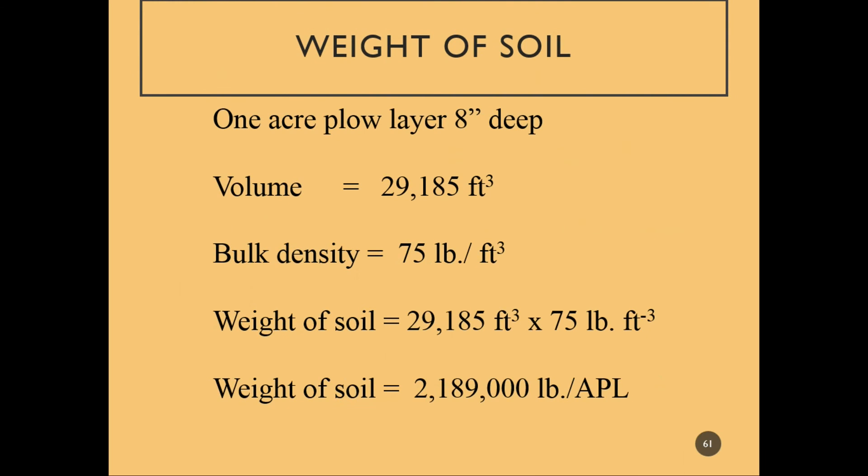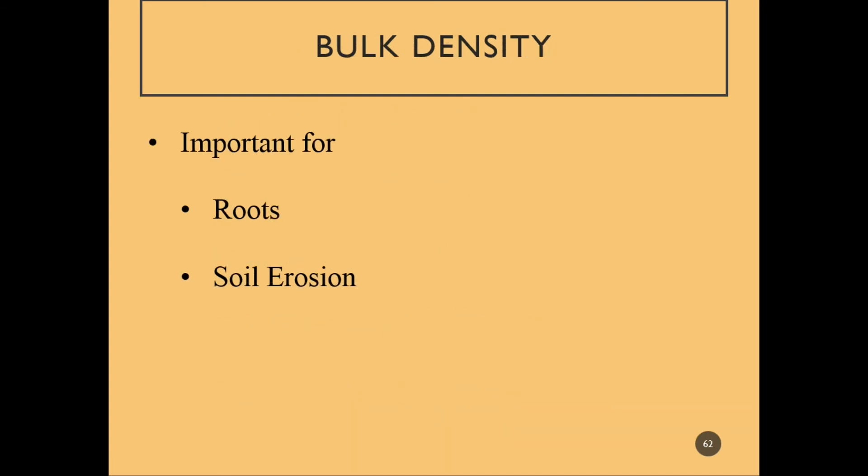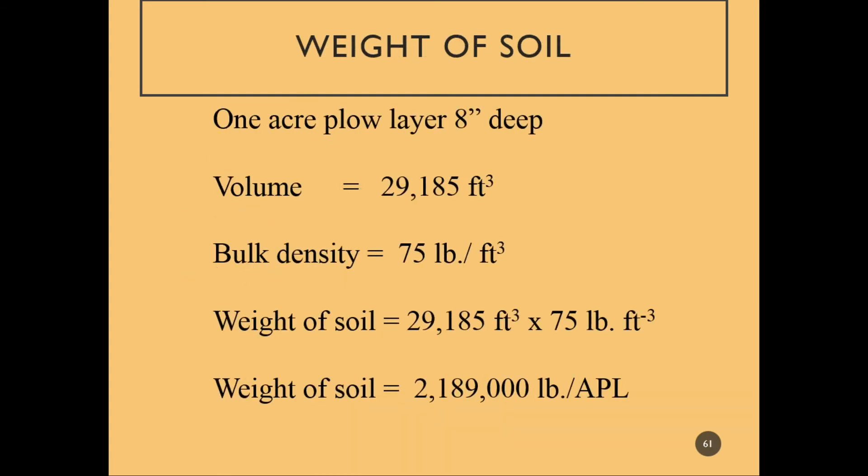Working that out further, we can get approximately 2.2 million pounds per acre plow layer — that is 8 inches deep across one acre. This is a quick way to use bulk density and also show that there is an enormous amount of weight in soil.